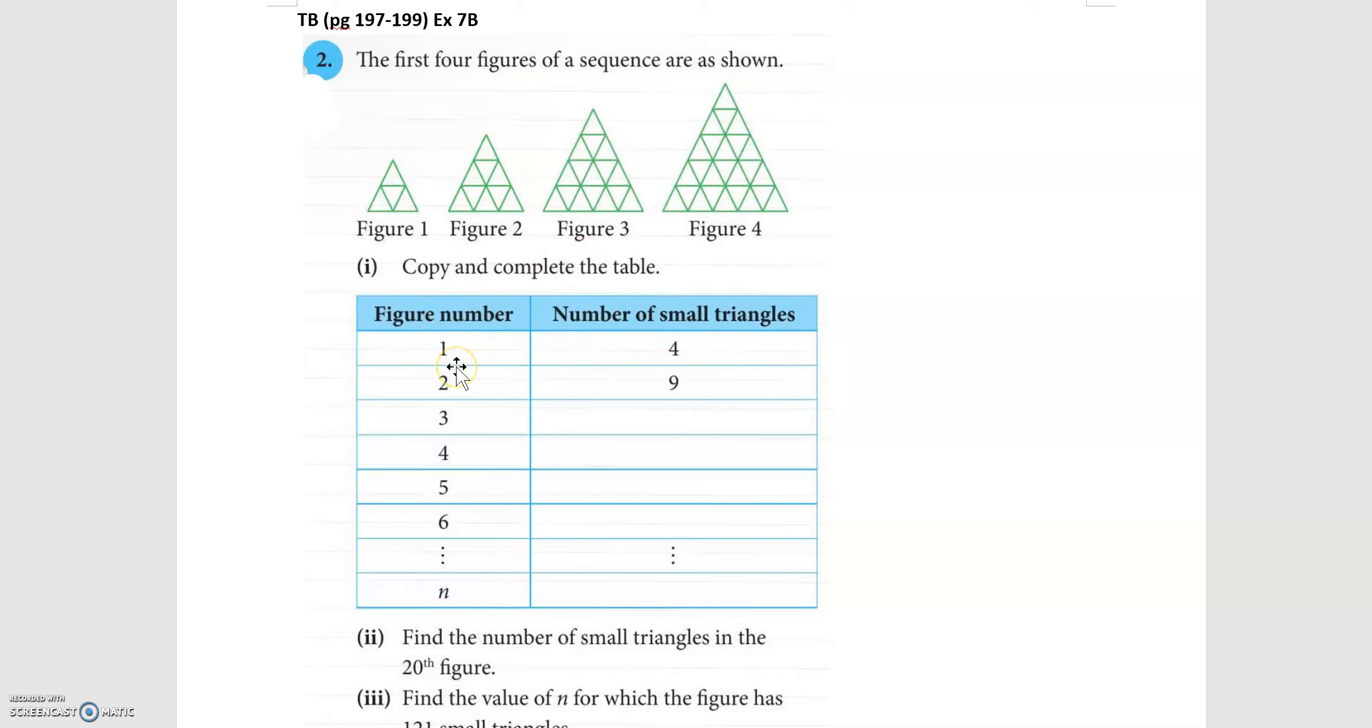So for figure number one we see that there are four small triangles. For figure number two there are nine and so on.